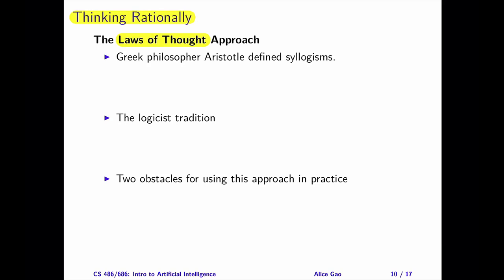Aristotle, the Greek philosopher, first attempted to create a formal definition of thinking correctly. Aristotle defined syllogisms, which are patterns of argument structures such that, given correct premises, one can always draw correct conclusions. Here's a famous example of a syllogism: every person is mortal; Socrates is a person; therefore, Socrates is mortal. Syllogism is an example of a law of thought, and the idea of syllogism inspired people to develop the field of logic.